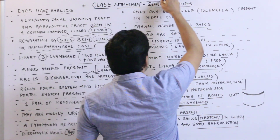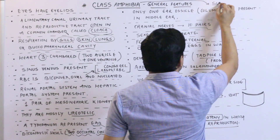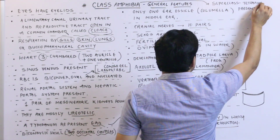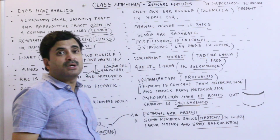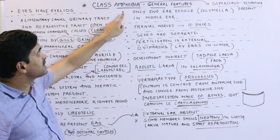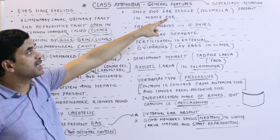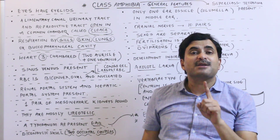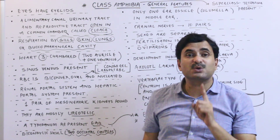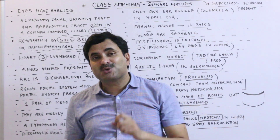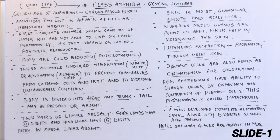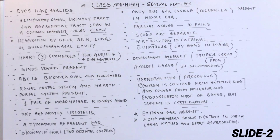Class Amphibia belongs to the super class Tetrapoda and is the smallest class of super class Tetrapoda. These were the important features of Class Amphibia. In the next video, we will also discuss the classification of amphibians, which is also very important and is not given in the NCERT.